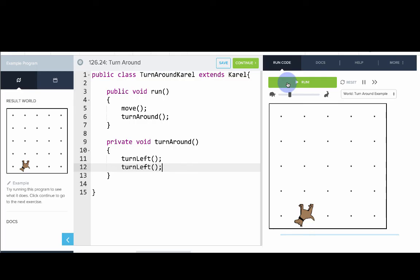And so here you can see we defined a method called turn around and when we run it and we call turn around it's actually a shortcut for turning left twice. So let's reset that and use the step tool to figure that out. So first Carol moves and then we call turn around and turn around is really a shortcut for what? Turning left and then turning left again.